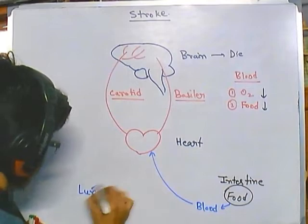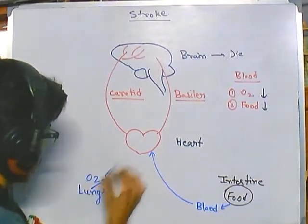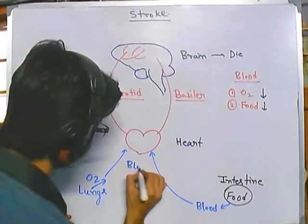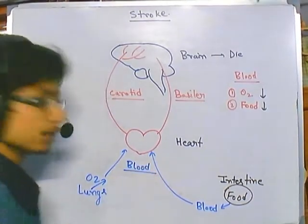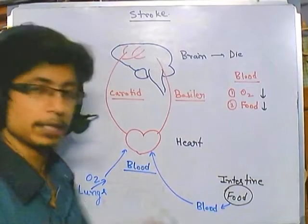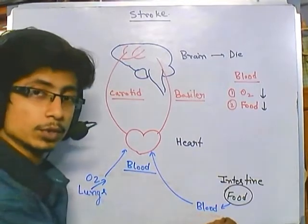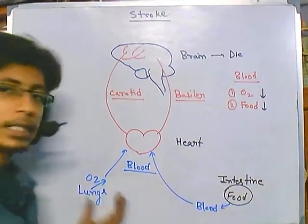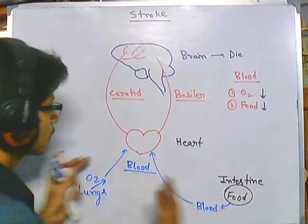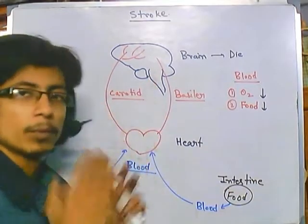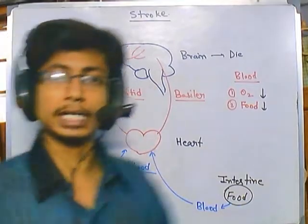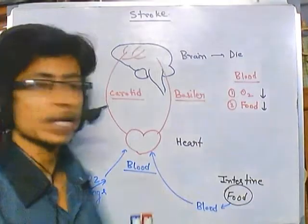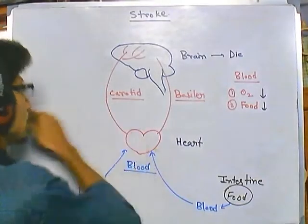Lungs provide oxygen to the blood. If we talk about the blood present in our heart, it contains both oxygen as well as a food source — food from intestinal absorption and oxygen from the lungs. The goal of the heart is to deliver this oxygen- and nutrient-enriched blood from cell to cell throughout the body.